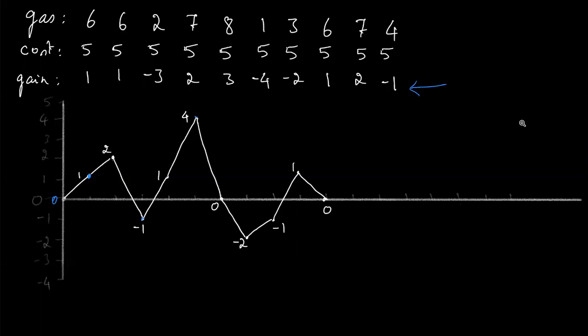After that there is a gain of one so we go up to minus one, then a gain of two to reach plus one, and the last station has a deficit of one but we have that one so we reach zero. This means the total gas across all stations equals the total cost. So if the overall gas sum is less than the cost, there is no solution at all.